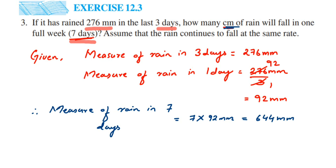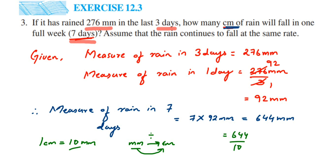The answer is required in centimeters, so we convert. We know that 1 centimeter equals 10 millimeters. Converting from a smaller unit to a higher unit means we divide. So we divide 644 by 10. Since there is only one zero in 10, we place the decimal point one digit from the right, giving us 64.4. If it were 100 in the denominator, we would move two digits from the right.